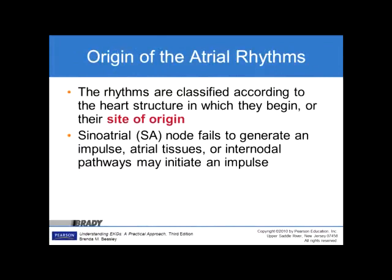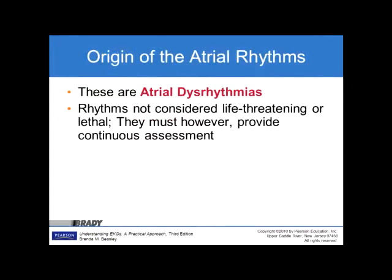Origin of Atrial Rhythms. Rhythms are classified according to the heart structure in which they begin, or their site of origin. When the sino-atrial node fails to generate an impulse, atrial tissues or internodal pathways may initiate the impulse. The origin of this beat is going to come from very close to the SA node, so the intrinsic rate will probably be the same as the SA node. This can also get us into problems — if one SA node is 60 to 100 beats per minute and another site kicks up at the same intrinsic rate, it could double the heart rate very quickly. These are atrial dysrhythmias.